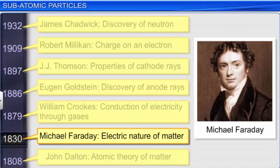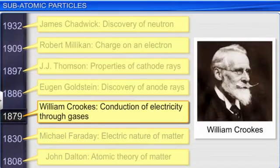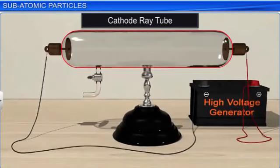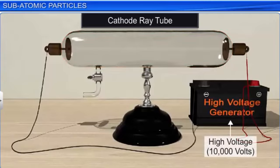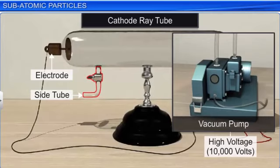The structure of an atom was demystified only when William Crookes conducted experiments to study electrical discharge through gases in 1879. The apparatus used consisted of a glass discharge tube, now called cathode ray tubes or Crookes tubes, and a high voltage source of 10,000 volts. The discharge tube was sealed at both ends and fitted with a thin piece of metal called electrodes at each end. It had a side tube fitted with a stopcock connected to a vacuum pump to control the pressure of the gas inside the tube.